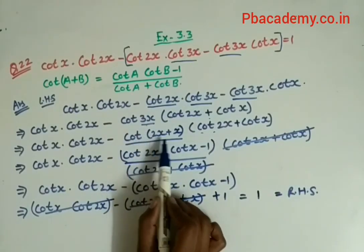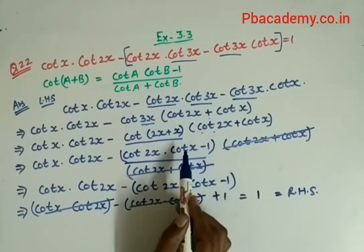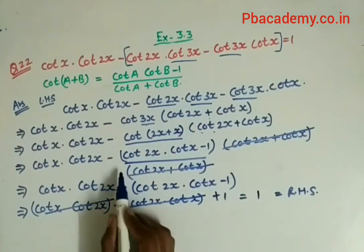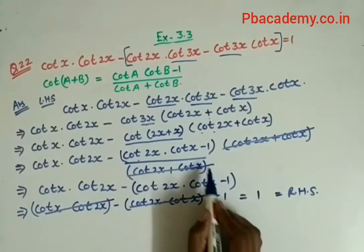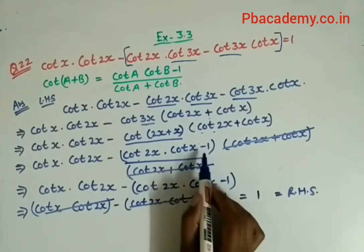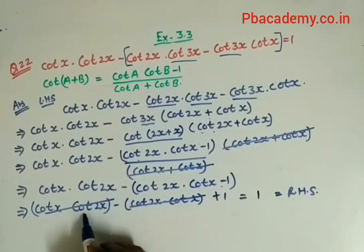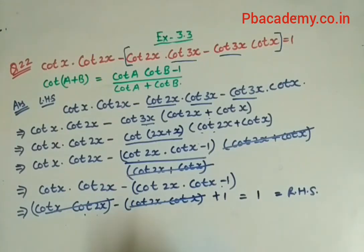The method we used will cause these terms to cancel out. After opening the bracket, this minus becomes plus, and the cot x · cot 2x terms cancel each other out. What remains is plus one, which equals our right hand side.